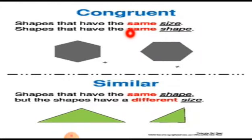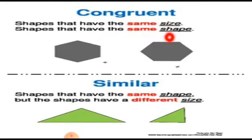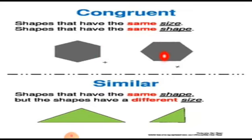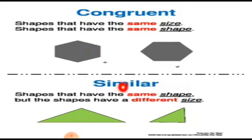First I am telling you about concurrent figures. What are concurrent figures? Shapes that have the same size and the same shape. Look at these two figures — both have the same shape and both have the same size. So these figures are called concurrent figures.